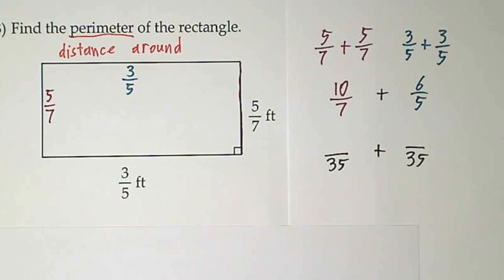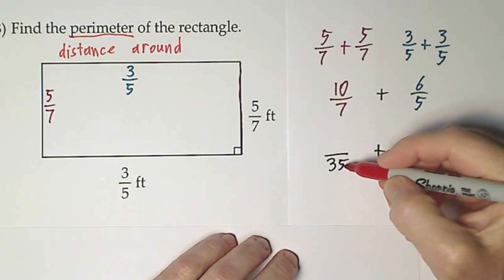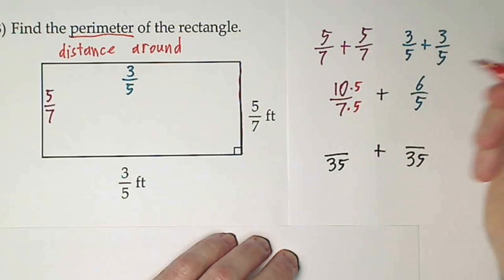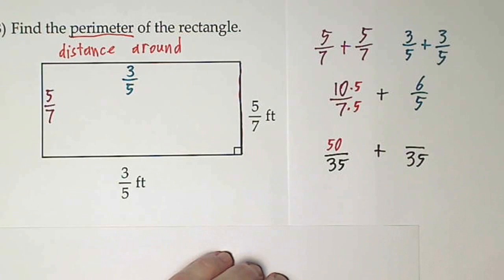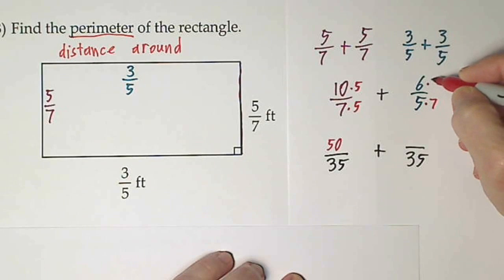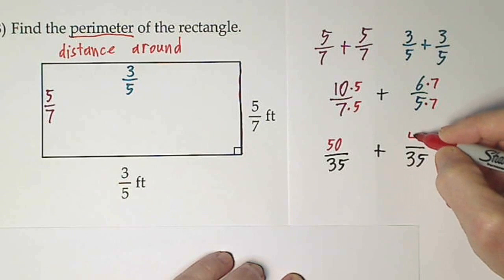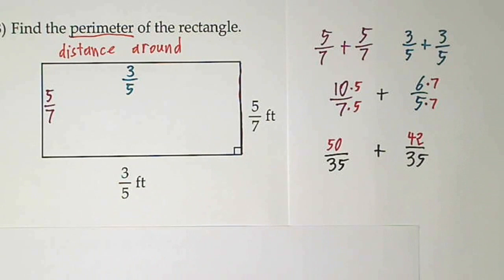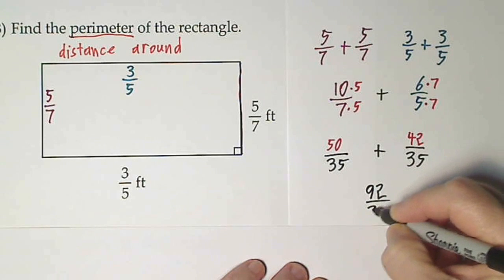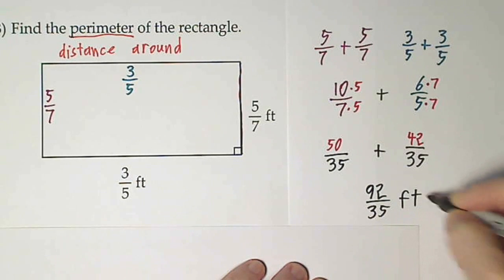And how do you get from 7 to 35? To get from 7 to 35, you multiply by 5. So you have to do the same to the numerator. Gives you 50/35. To get from 5 to 35, you multiply by 7. You have to do the same to the numerator. So when we finally put all this together, we get 92/35 feet.